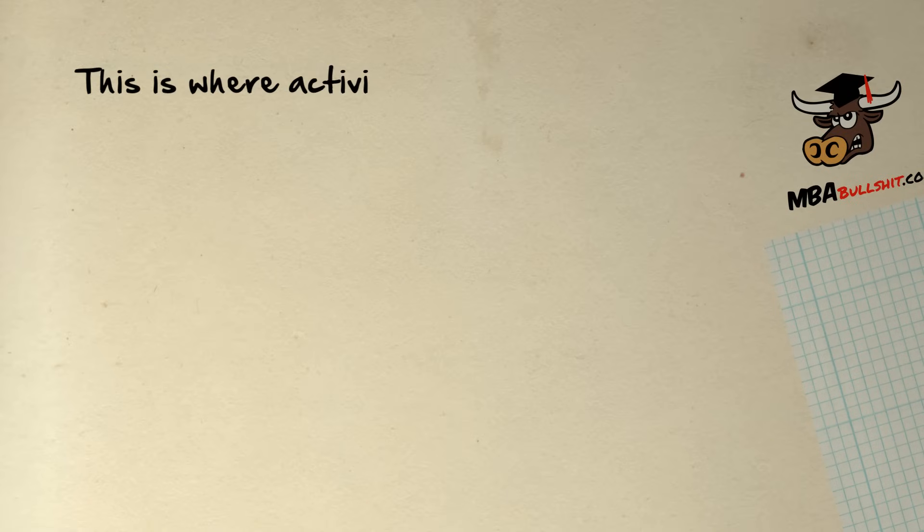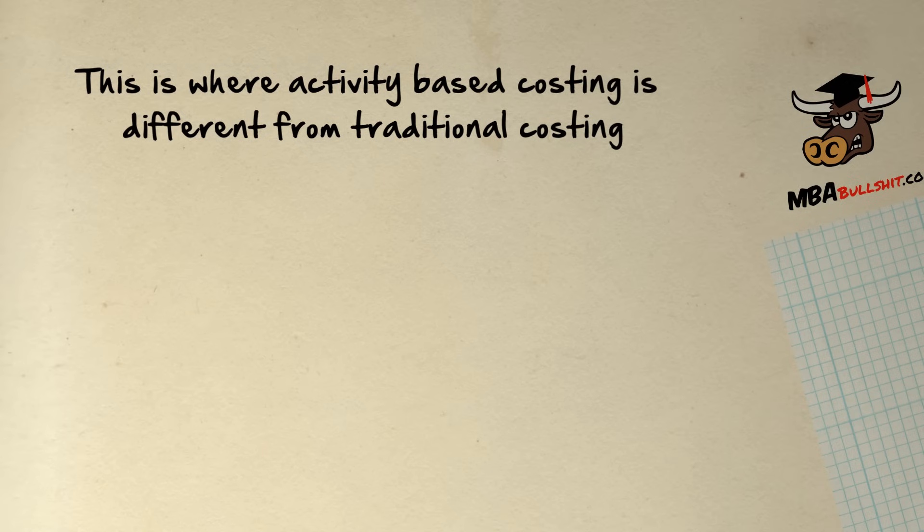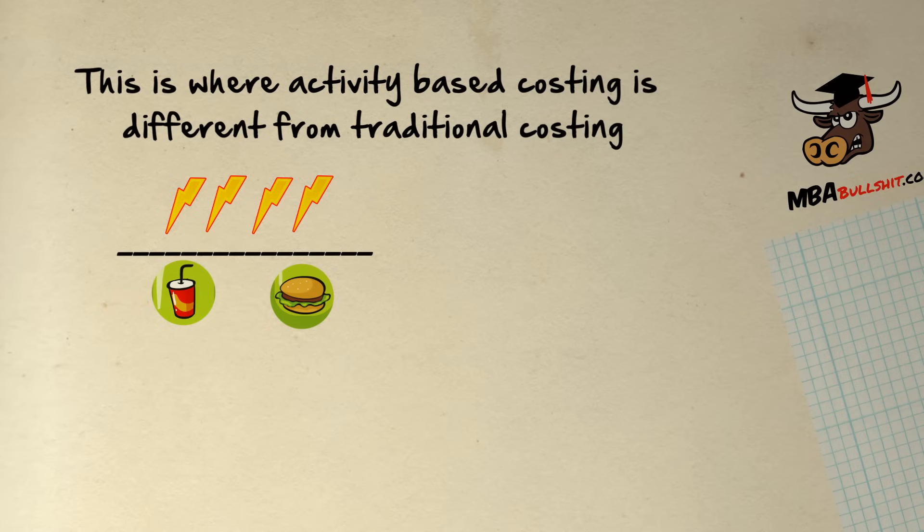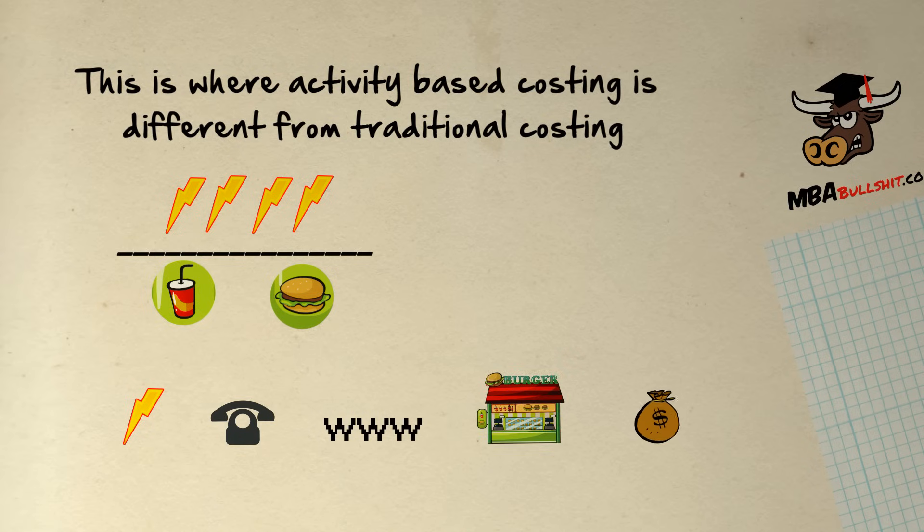This is where activity-based costing is different from traditional costing. Traditional costing is easy because it often just divides some types of costs equally between different items. These are usually costs which are a bit difficult to divide or allocate between products such as electricity, telephone bills, internet usage, rent, salaries, and others.